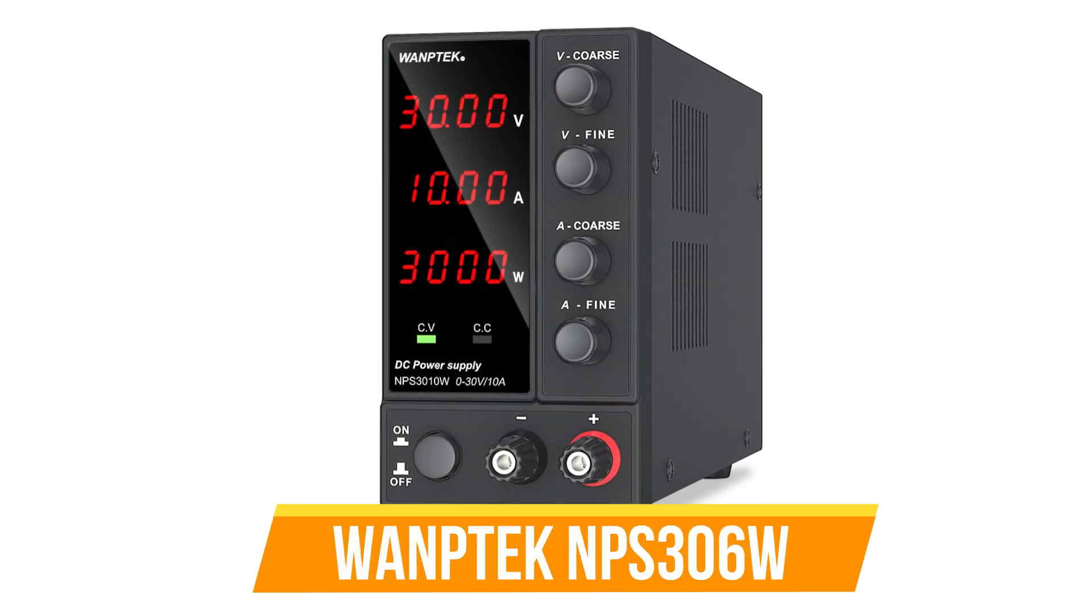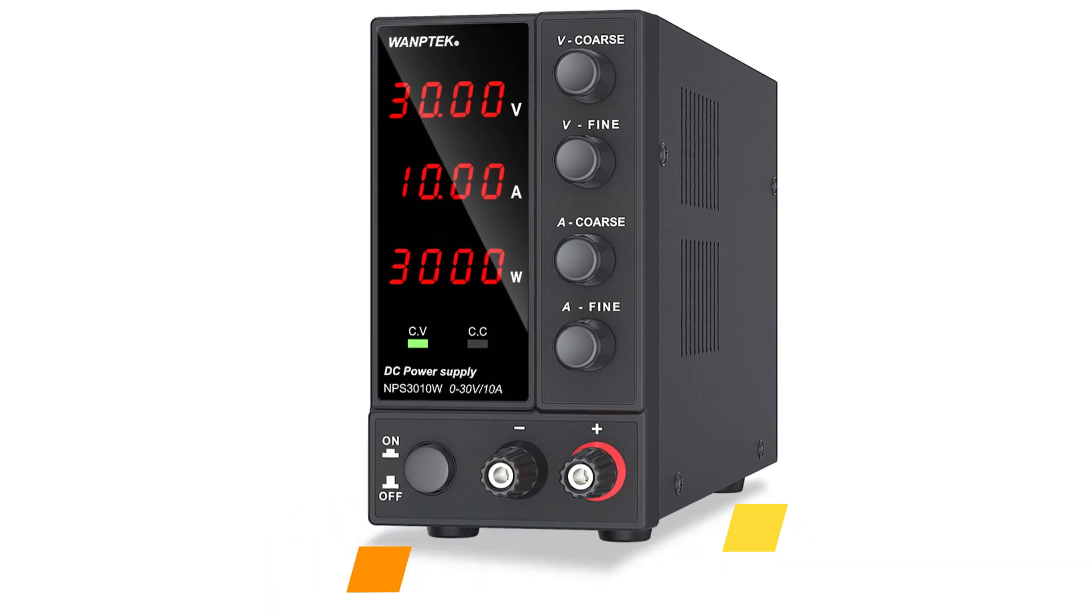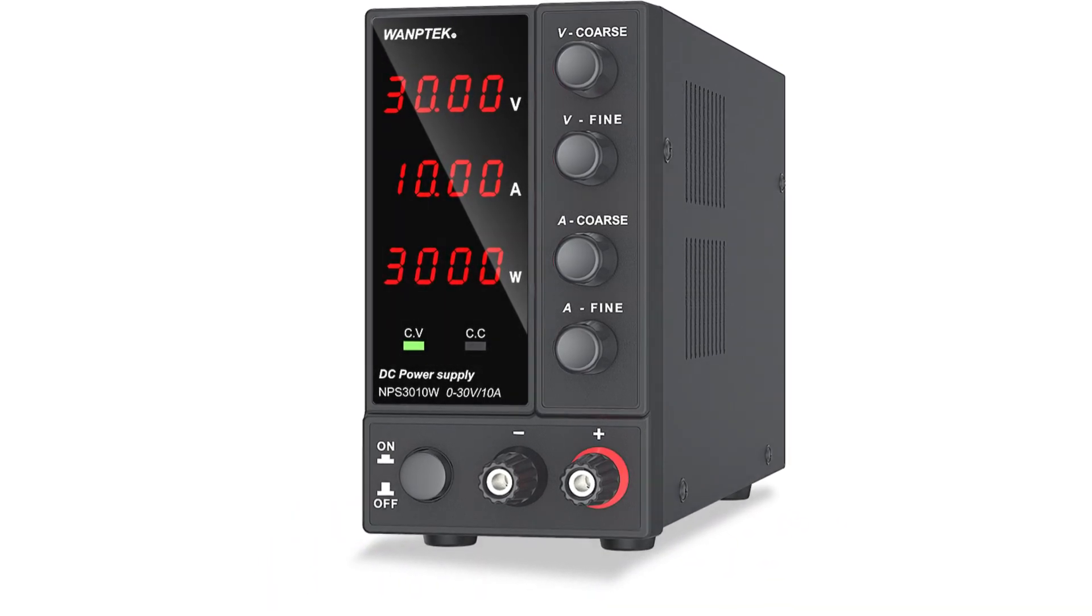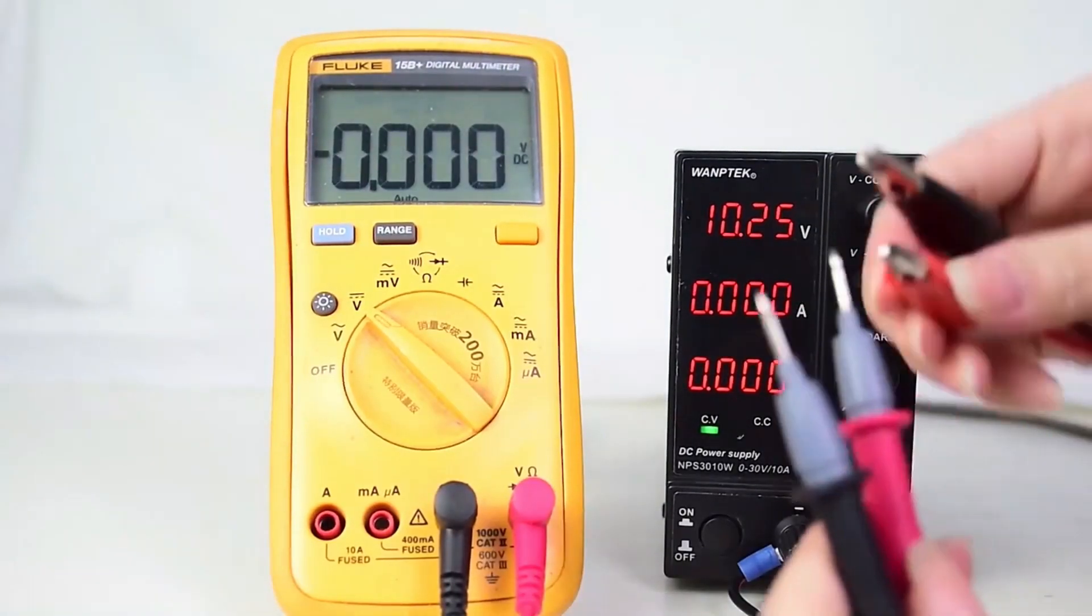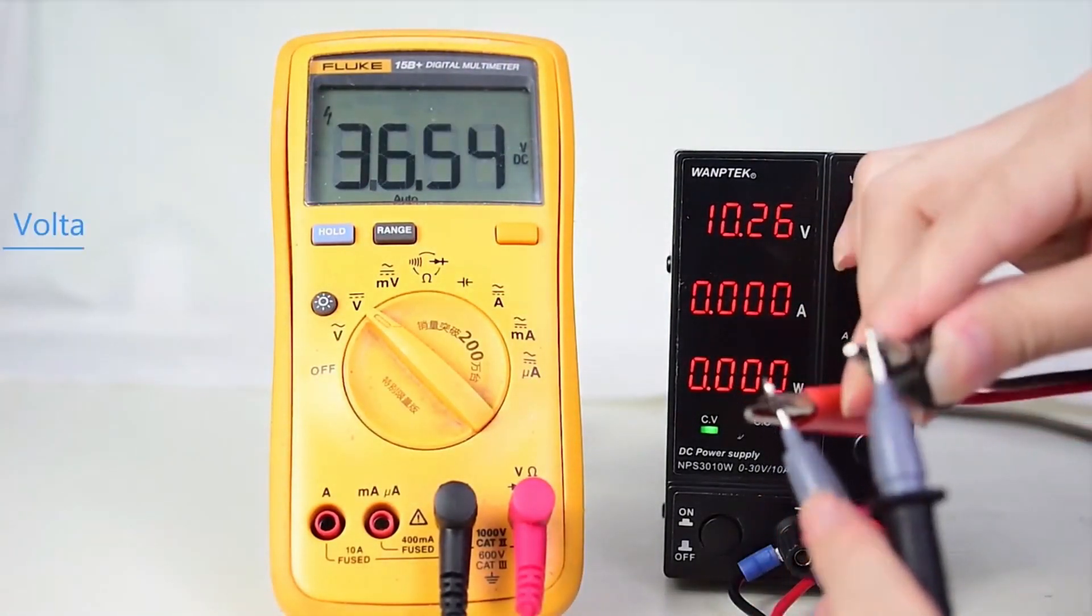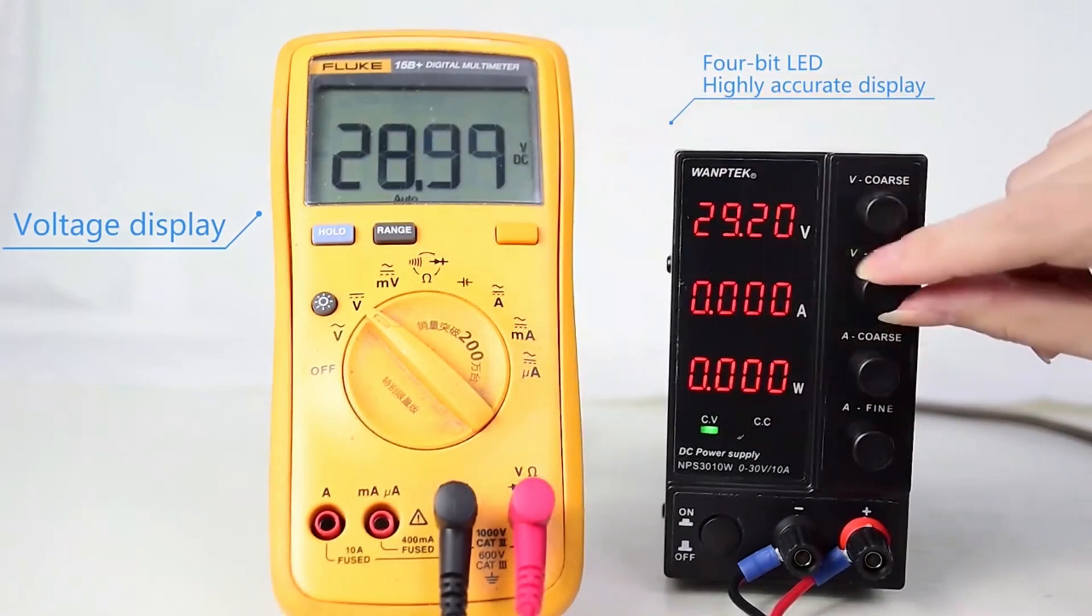Number 1: WANTEC NPS 306 DC Power Supply. The WANTEC NPS 306 DC power supply is a reliable and high-quality device suitable for various applications, including electronics prototyping, testing circuits, and powering electronic components. With an output power of 300W, it delivers sufficient power for demanding projects in industrial, educational, and research settings.